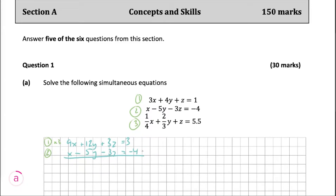Then all we have to do is go through and add all the terms together. These two cancel out, and now we have equation four.